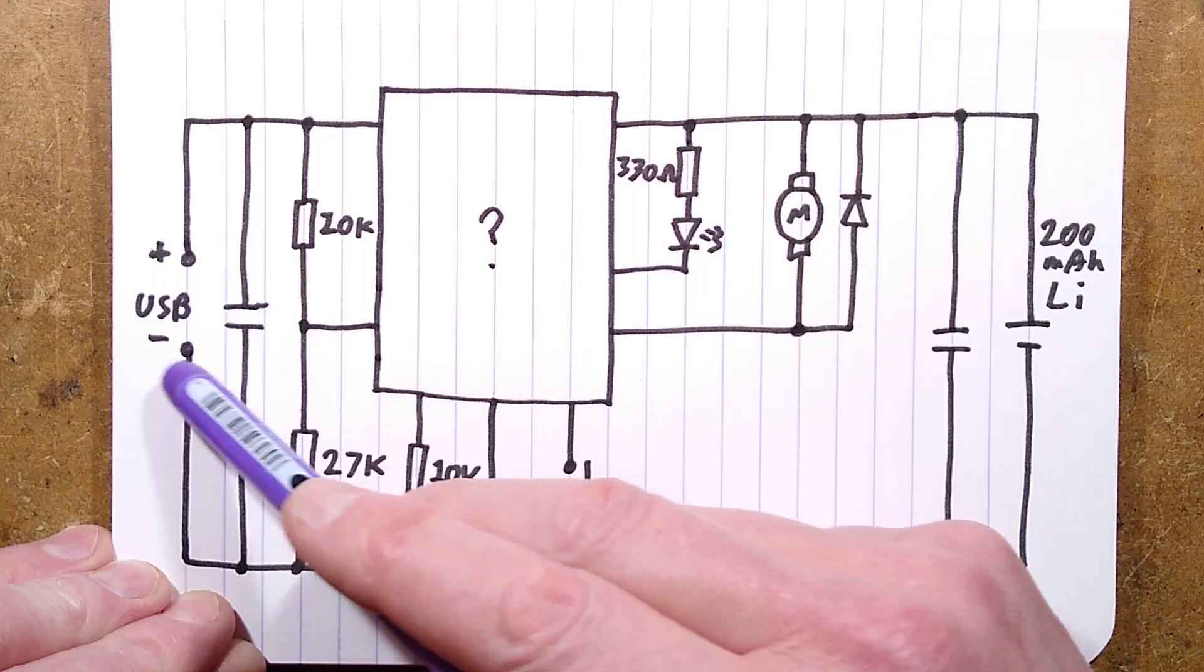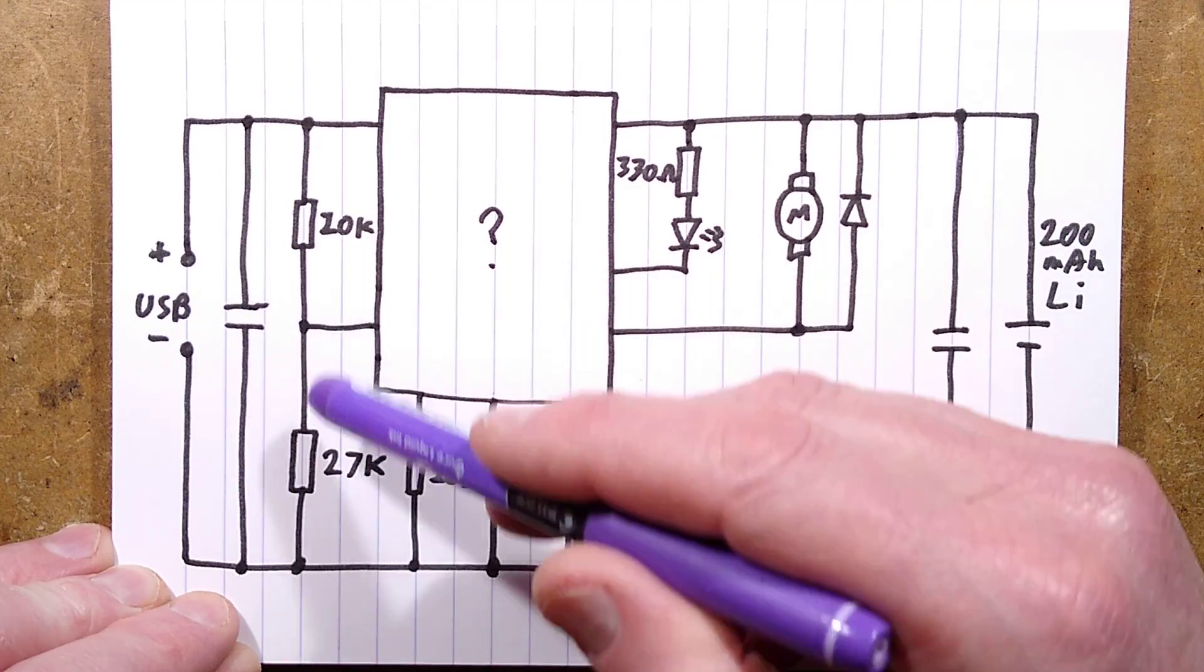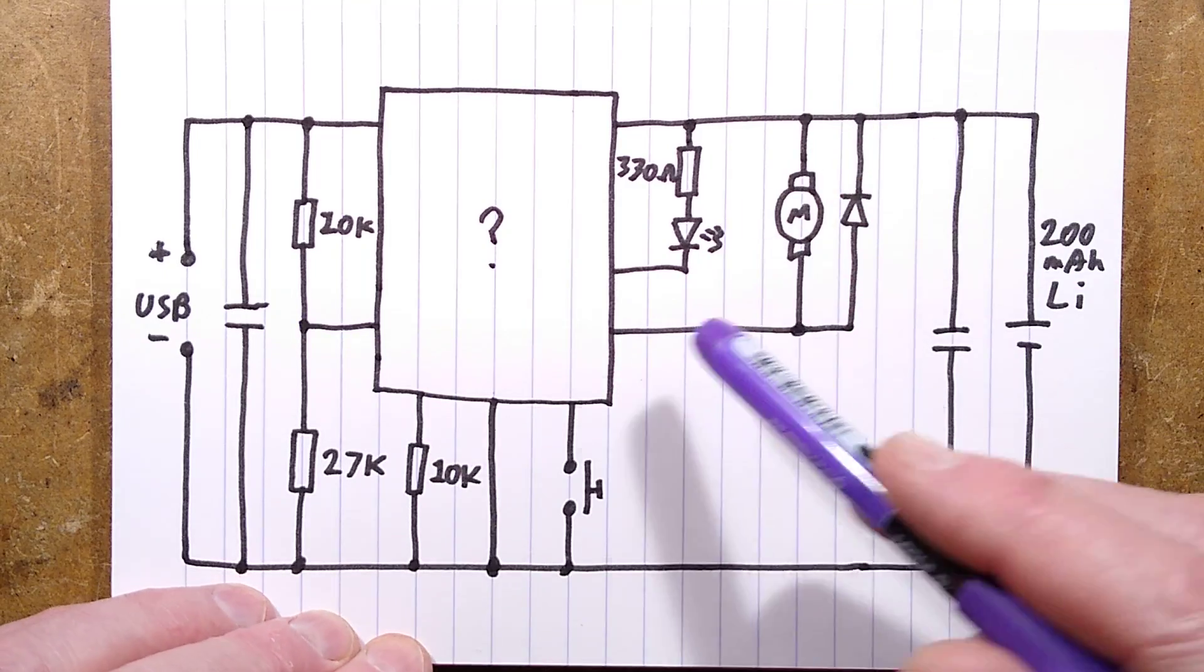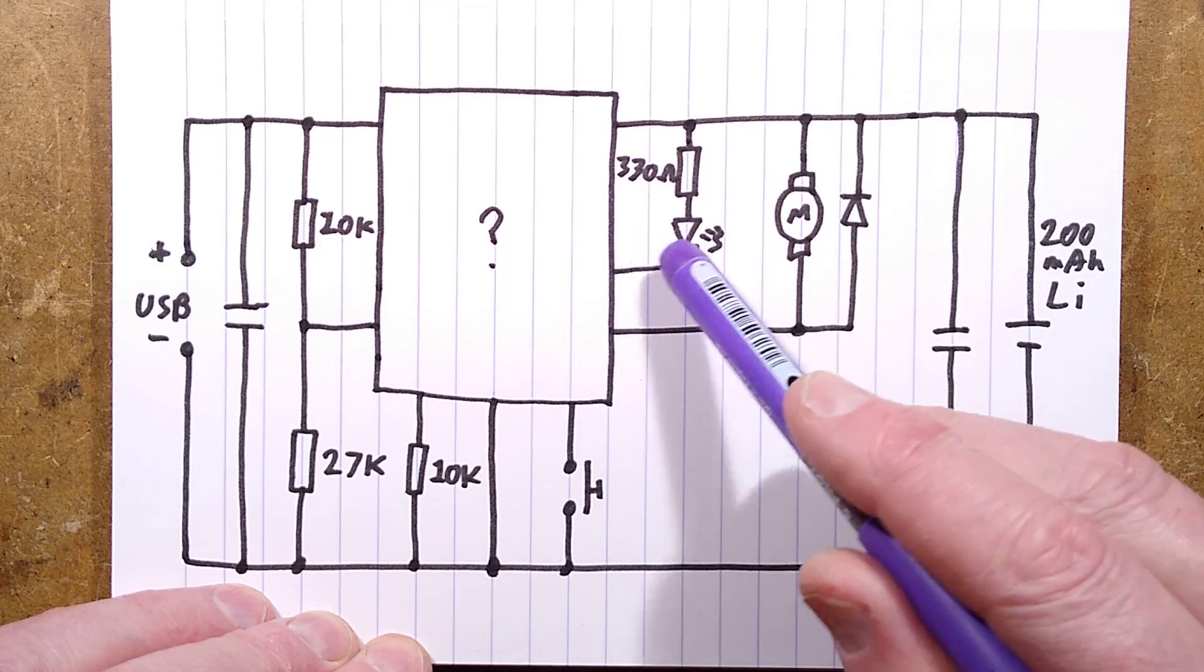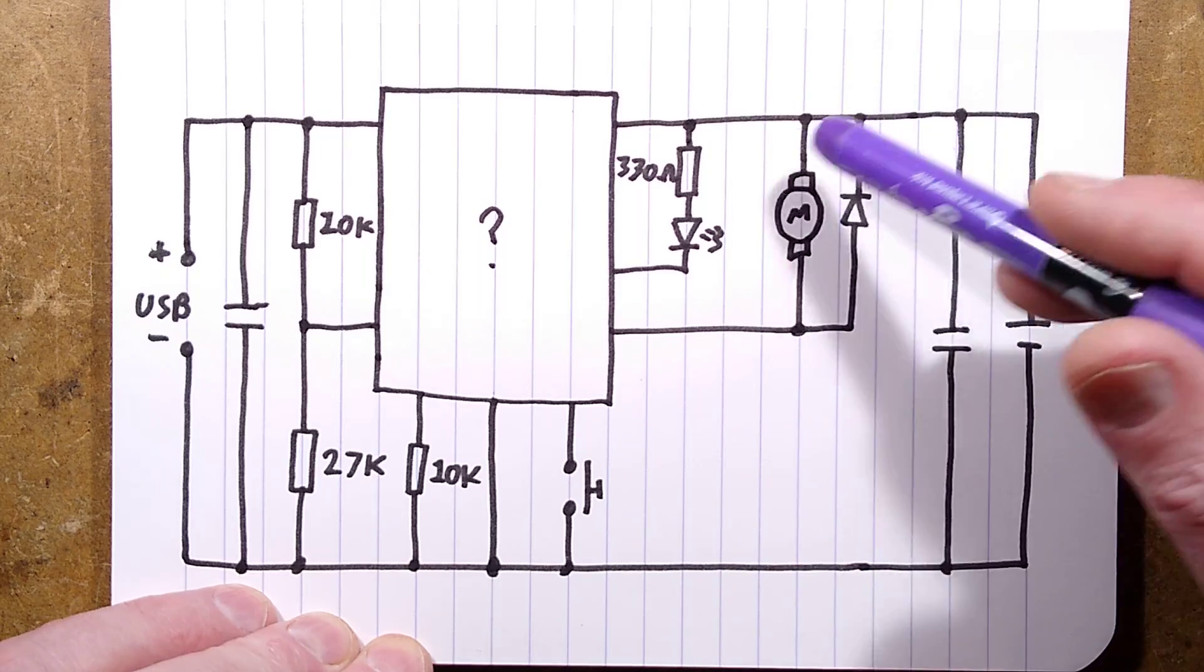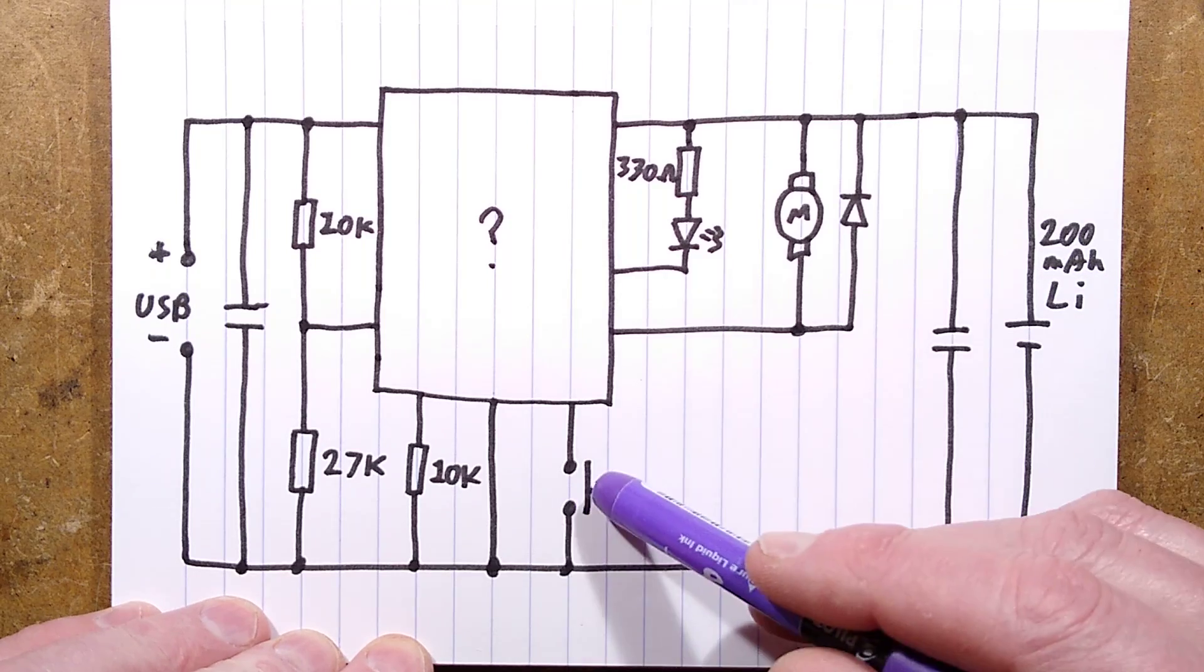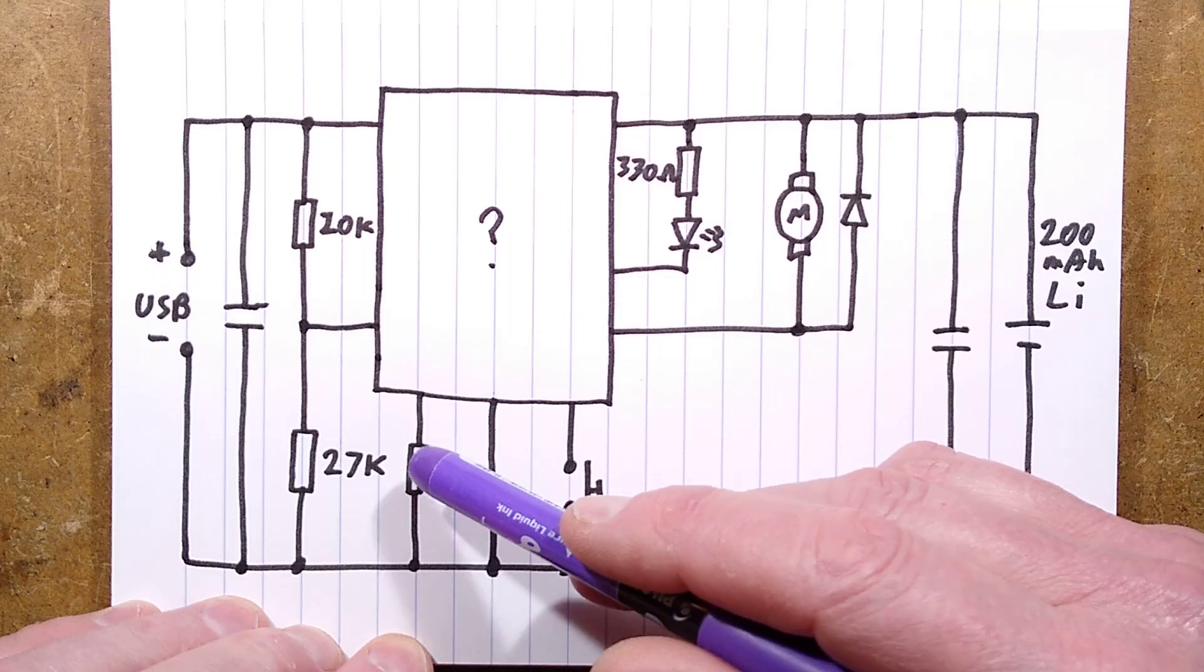So the USB supply comes in. It's got a little decoupling capacitor for stability across it. It's got that potential divider that provides an input to the unit to tell it that it is charging. The output is really simple - that 330-ohm resistor for the LED. It's got the motor with the diode across it, and then it's got, on that output, the decoupling capacitor for stability for the fairly low-capacity cell. It's got the push button to the zero-volt rail for the modes, and then it's got that 10K resistor.